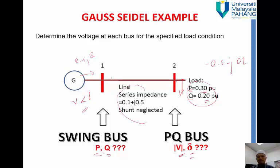So this is the line impedance. So this time we not ignore the, we just ignore the shunt but the resistance we will consider in this example.